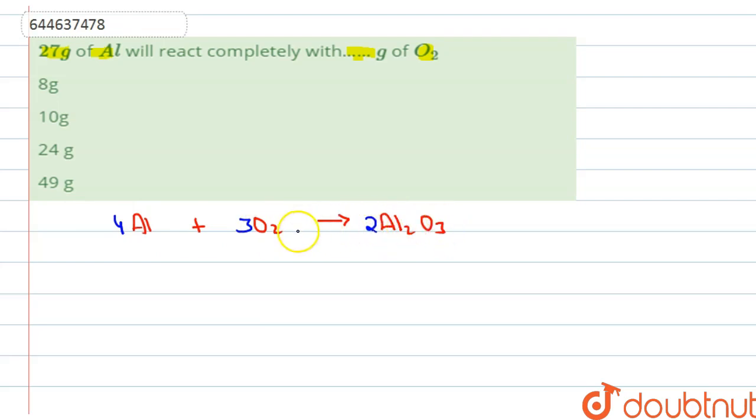According to this, we have given 27 grams of aluminum. Which means how many moles of aluminum are given? There is a formula to find out the number of moles, which is number of moles equals given mass divided by molecular mass. According to this, given mass is 27 and molecular mass of aluminum is 27, so this is 1 mole.